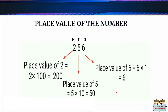Moving on to the place value of a number. The place value is the value of the digit because of its place in the number. For example, when we take the number 256: the place value of 2 is 200, that is 2 multiplied by 100. The place value of 5 is 50, that is 5 tens. And the place value of 6 is 6, that is 6 ones.